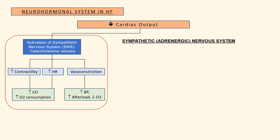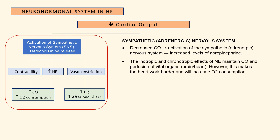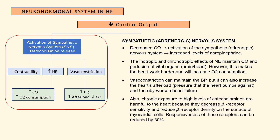First, let's talk about the activation of the sympathetic nervous system. A decreased cardiac output leads to activation of the sympathetic or adrenergic nervous system, resulting in increased levels of norepinephrine. The inotropic and chronotropic effects of norepinephrine will maintain cardiac output and perfusion of the vital organs — the brain and the heart. However, this makes the heart work harder, increases oxygen consumption, and can cause potential damage. Vasoconstriction can maintain blood pressure but also increases the heart's afterload, thereby worsening heart failure. Chronic exposure to high levels of catecholamines decreases beta-1 receptor sensitivity and reduces beta-1 receptor density on myocardial cells — responsiveness of these receptors can be reduced by 30%.